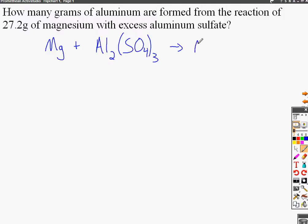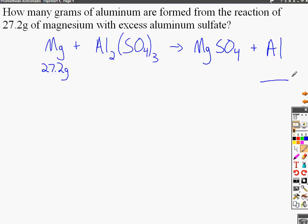Since the reaction does take place, magnesium will replace the aluminum and we'll have magnesium sulfate as a product. Magnesium has a positive 2 charge and sulfate is minus 2, so the formula is MgSO₄, plus aluminum all by itself. I'll write 27.2 grams underneath the magnesium and a blank in grams under aluminum since that's what we're solving for.